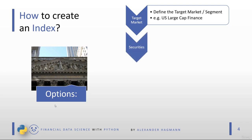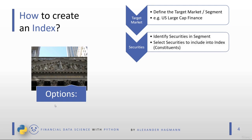We have to identify the securities in our segment and then select the ones we want to include — these are called the constituents of the index. Typically there are fundamental and measurable criteria to select constituents, such as market capitalization, but in most cases there are also soft facts evaluated by a committee.